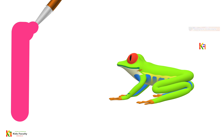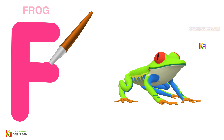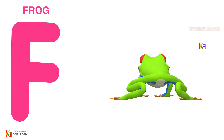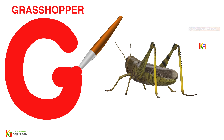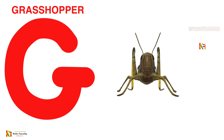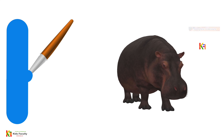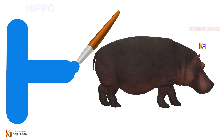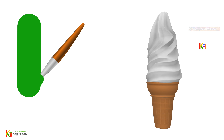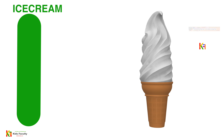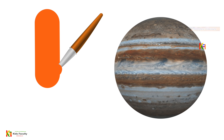F for frog, G for grasshopper, H for hippo, I for ice cream, J for Jupiter.